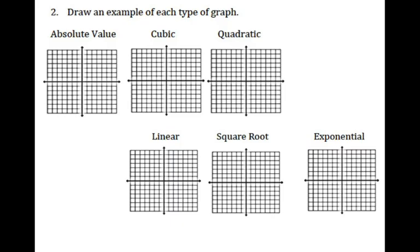Let's go to number two: draw an example of each type of graph. An absolute value graph looks like the letter V, so I'm going to draw a V-shaped graph. A cubic function looks like someone doing the disco — starting at the origin, going up to the right and down to the left. Quadratic is a U-shaped graph. A linear function is a straight line. Square root looks like a sideways curve. And exponential looks like a backwards curvy L.